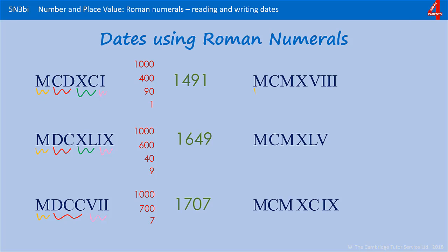Next one — 1000. We have a C in front of an M, so that's 900. Then we have a 10. We check the next one — that's a 5, so that must just be a 10. And then we have 8. That's 1918 — the end of World War I.